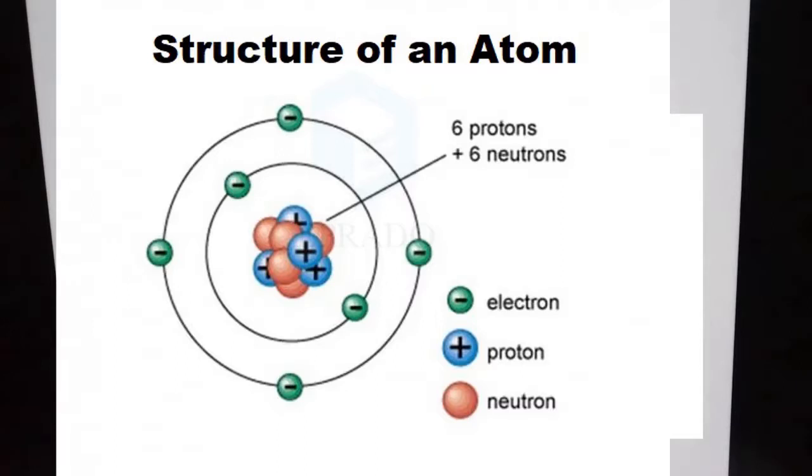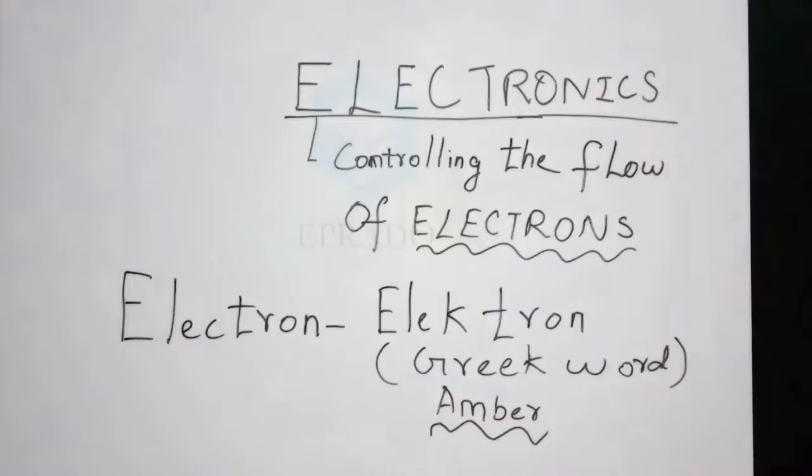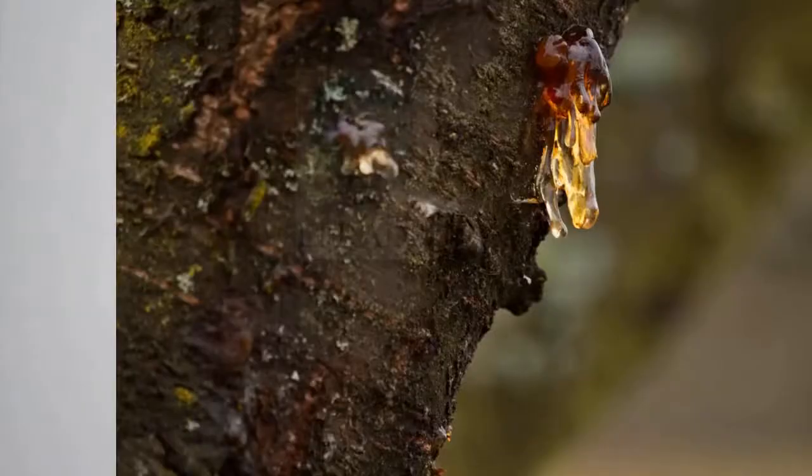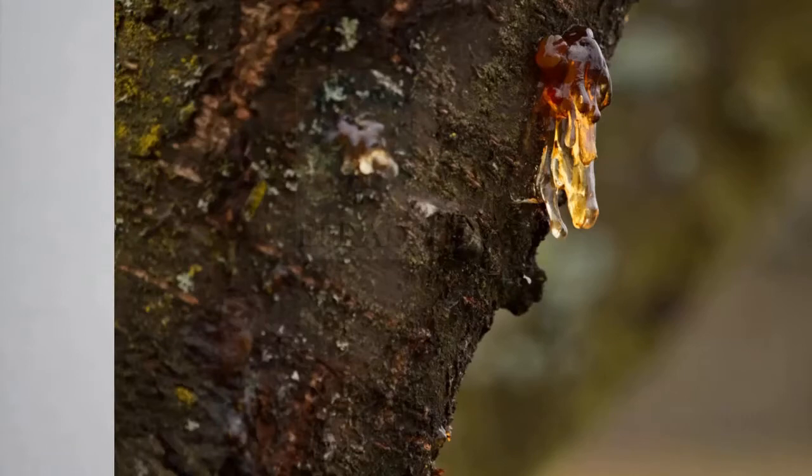The electrons are negatively charged and protons are positively charged. First, the word electron comes from the Greek word amber, which means a resin. So why has this name been chosen by scientists?